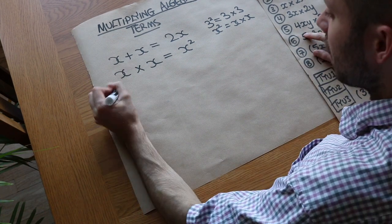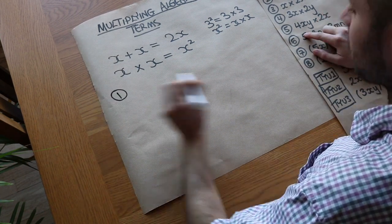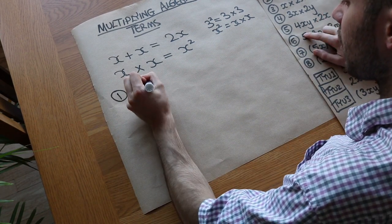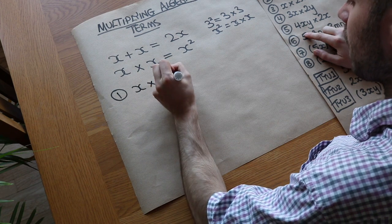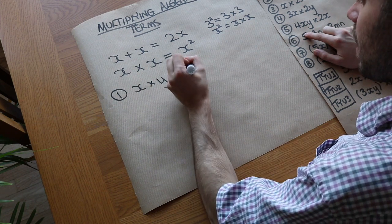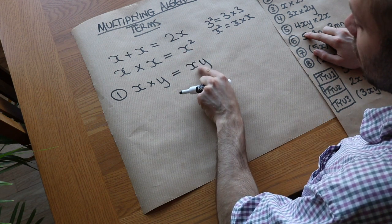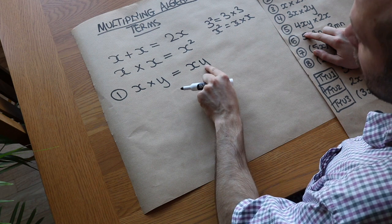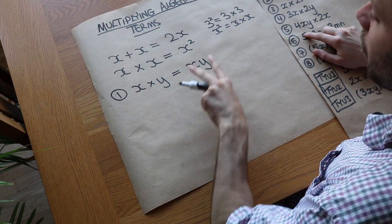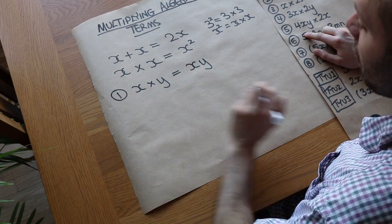I think this topic is best done by just doing a lot of examples. So let's say that we have x times y firstly. What does that give us? Well, that just gives us xy. And that's because in algebra, when we write two things next to each other, it means that you're multiplying them together. So these mean exactly the same thing, but we would always write it like this rather than like that.